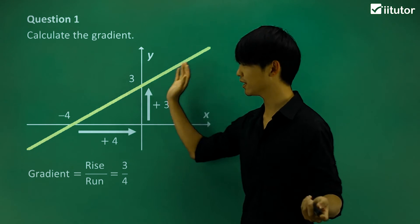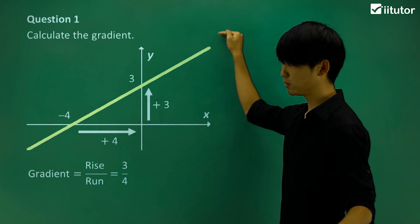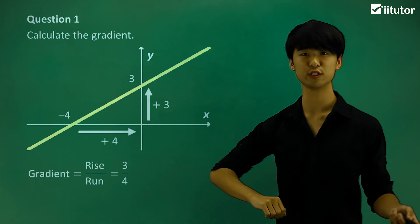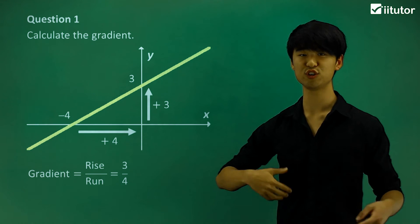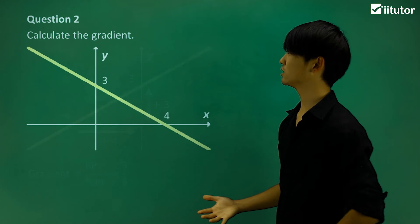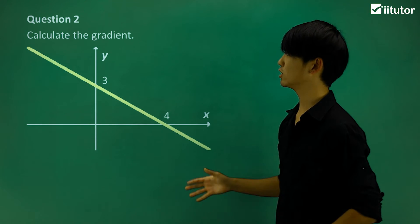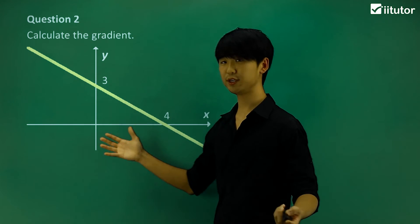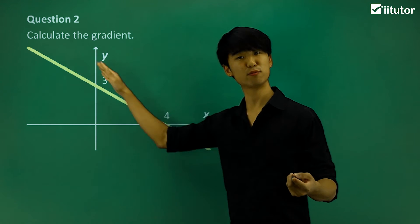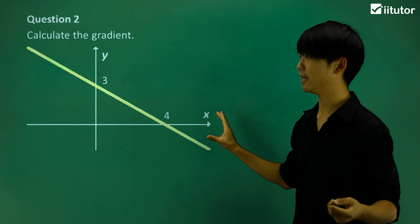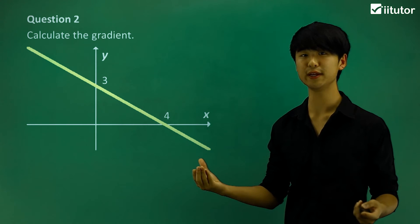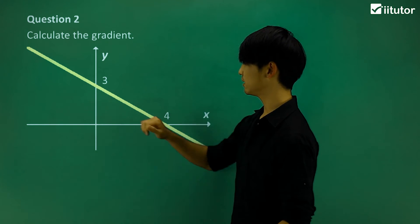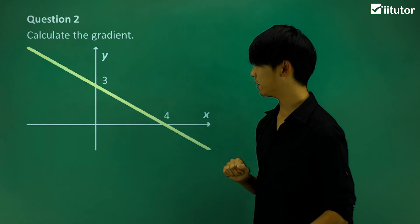And we know it's going from down to top, so it is a positive gradient — and we do get a positive gradient, which is nice to confirm. Now let's move on to question 2. We're going to calculate this gradient, and going from top down like this, it will look like a negative gradient, so hopefully we get a negative answer. We have intercepts of 3 and 4.